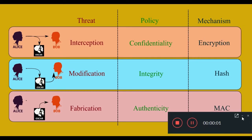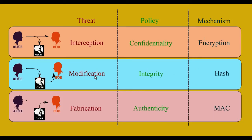Hello everyone. In this video I will discuss basic cryptography primitives. There are basically three kinds of attacks or risks. The first one is interception, which means that while you are communicating with another party, somebody else is listening without any consent.